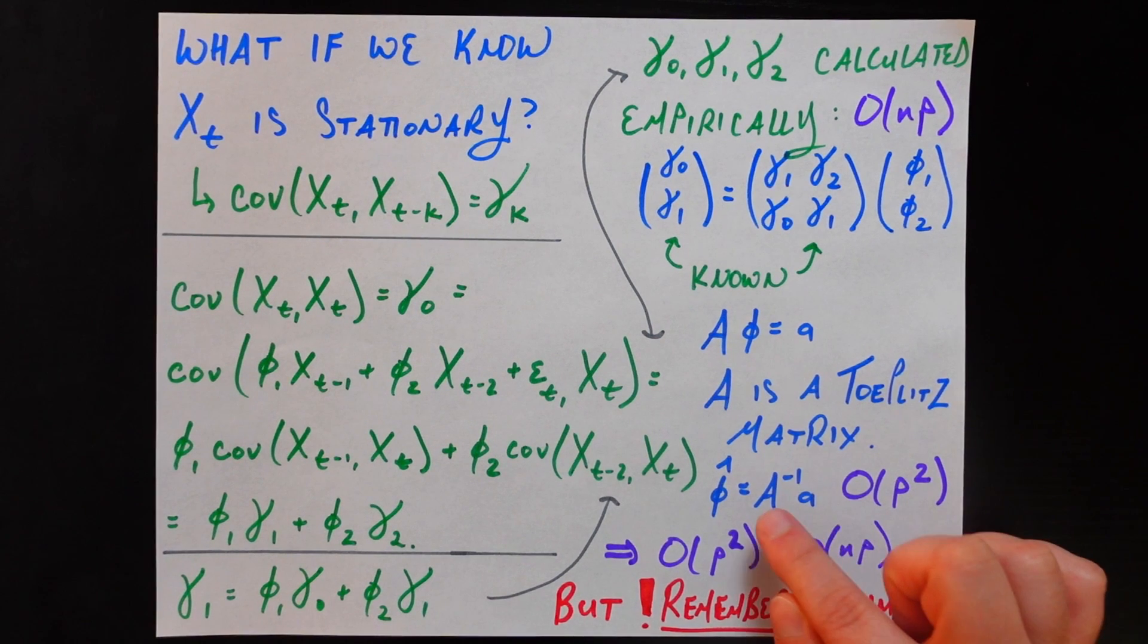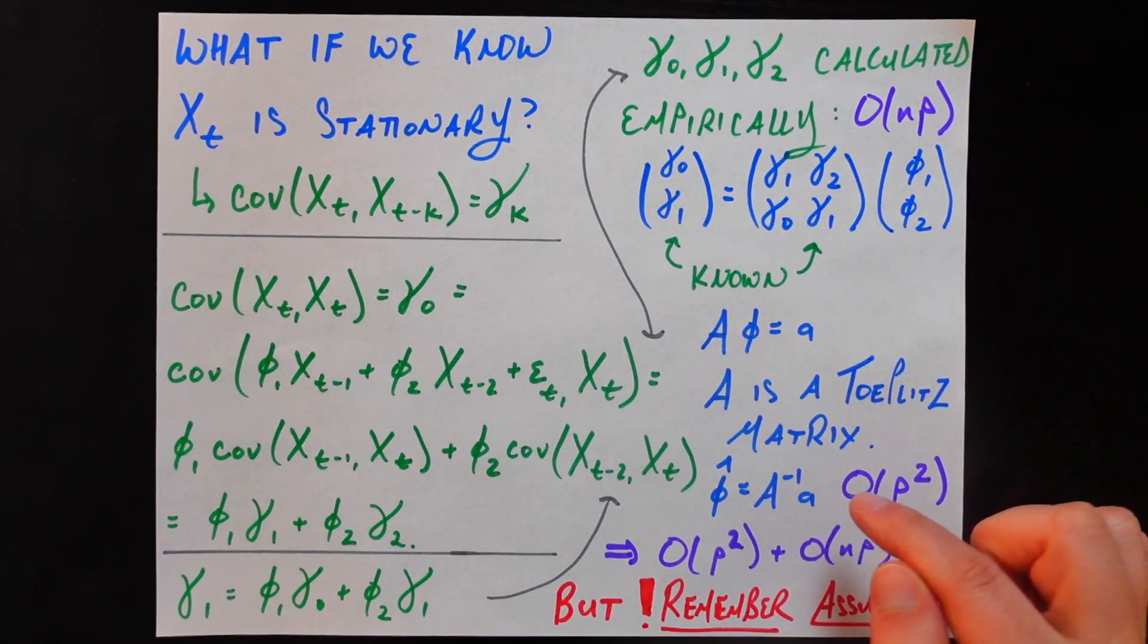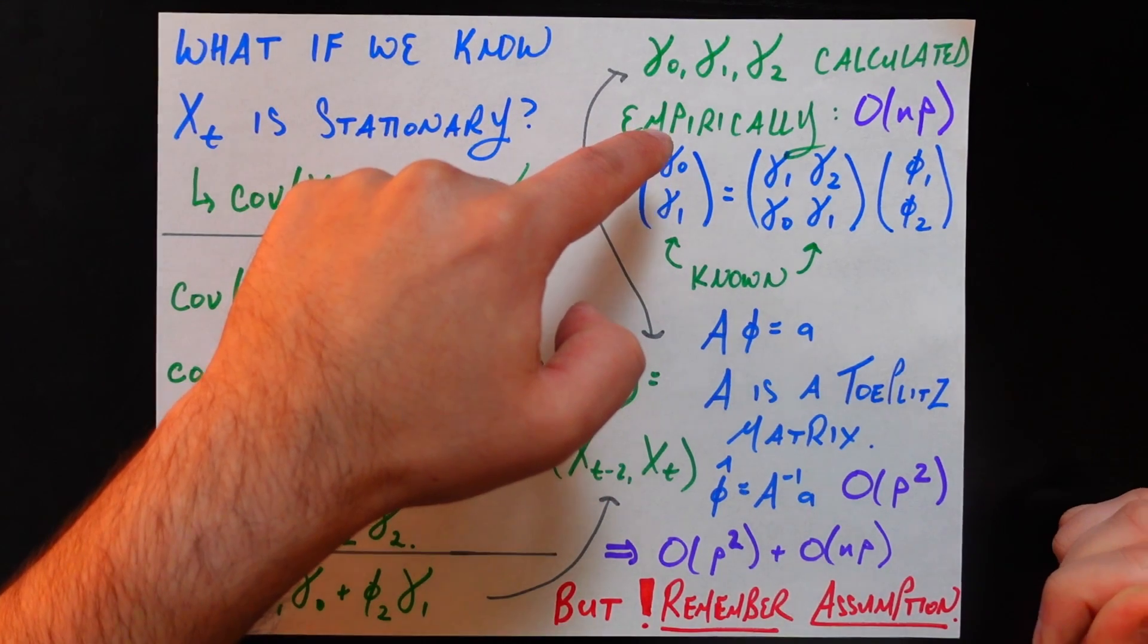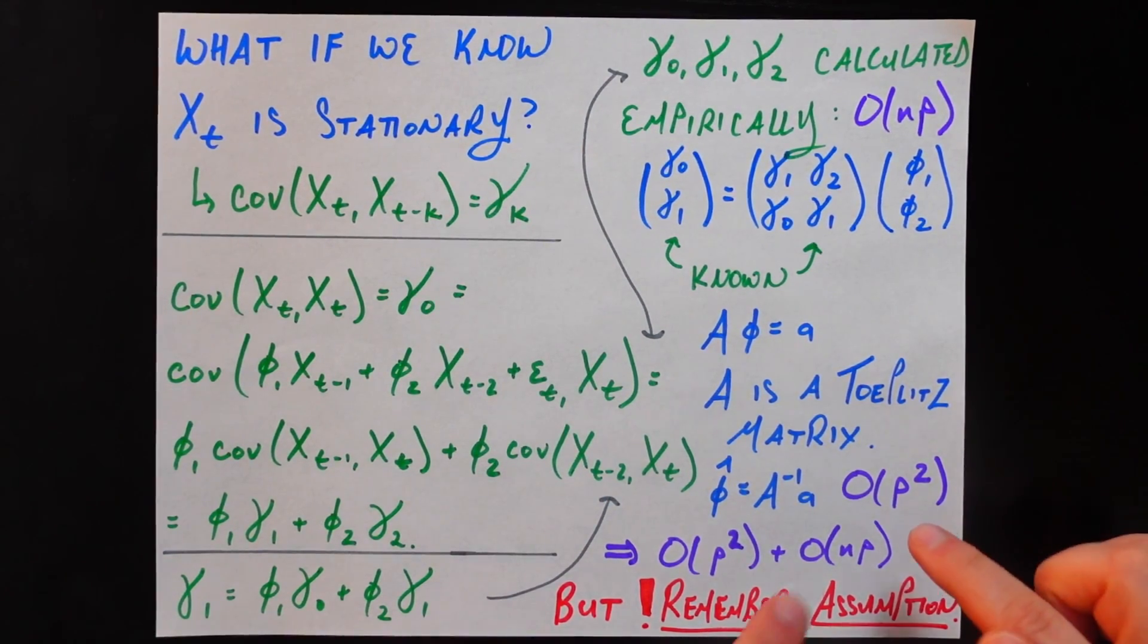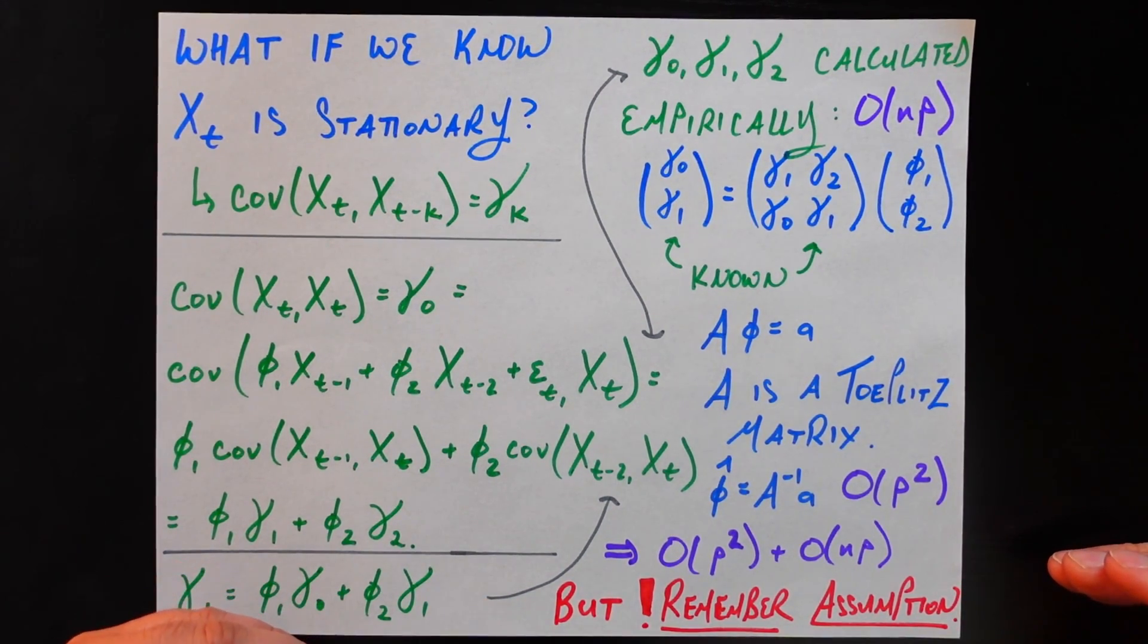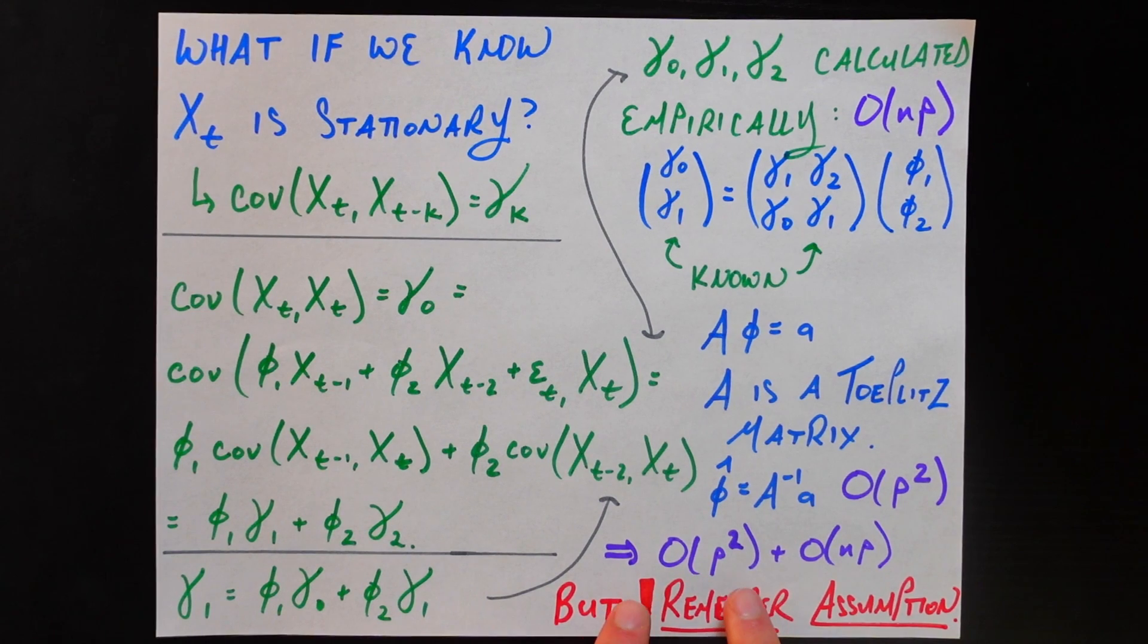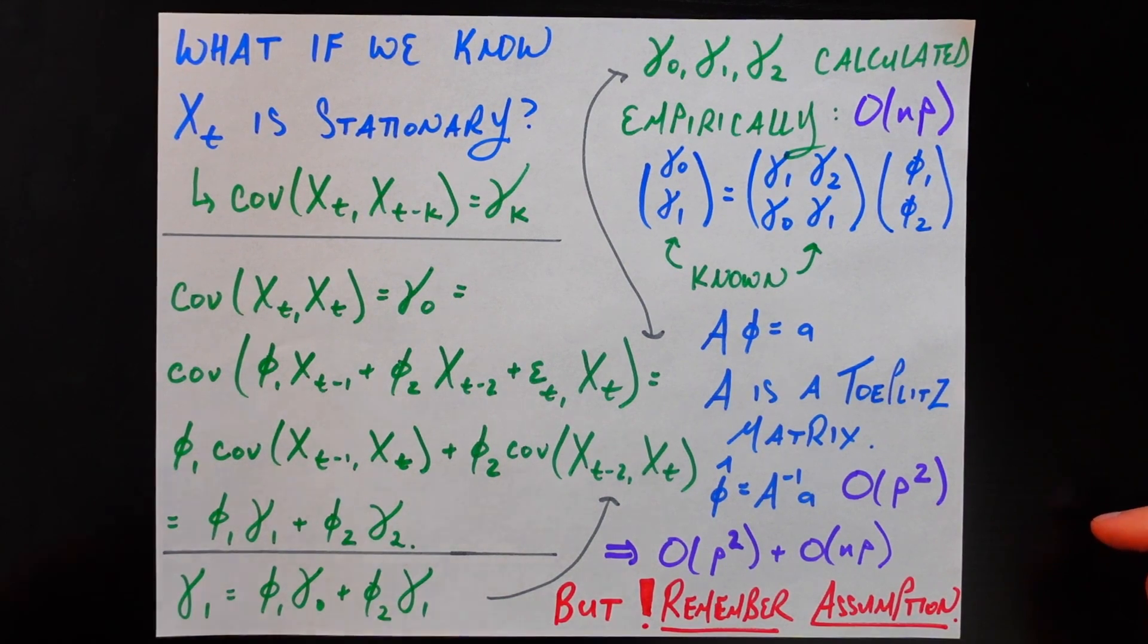So overall the computational complexity of using the Yule-Walker equations is going to be O(P^2), coming from this step here, plus O(NP) from getting those autocovariances in the first place. And so how does that compare to the OLS?